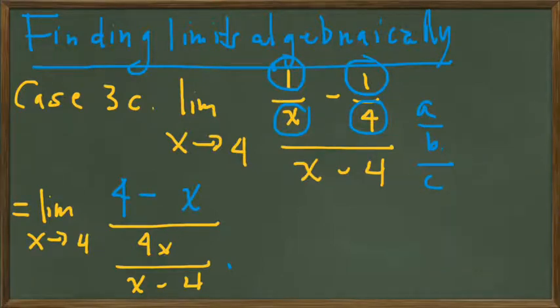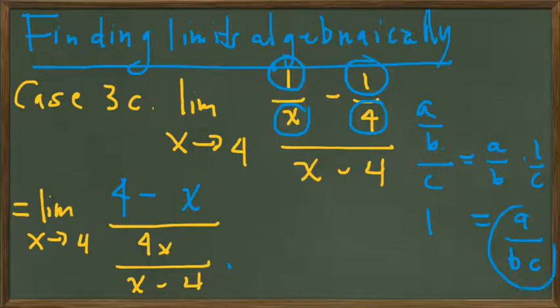So let's recognize our fraction as being of the form a over b over c, which we will rewrite as a over b times 1 over c, or a over bc. So we want to look at our fraction, or rewrite our fraction into this structure.